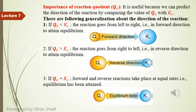When QC equals KC, equilibrium has been attained. This is a short question: how can you predict the direction of reaction? The answer is by comparing the value of QC with KC using the three conditions.